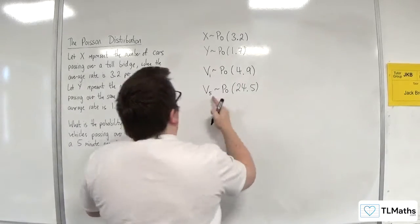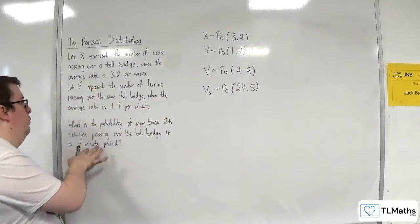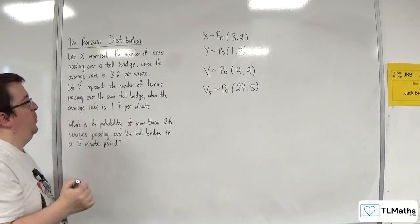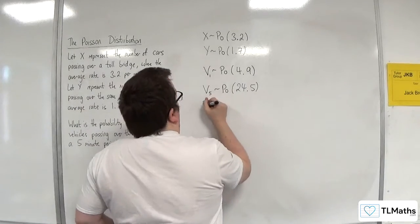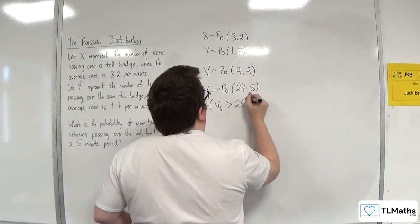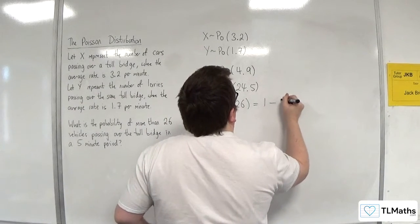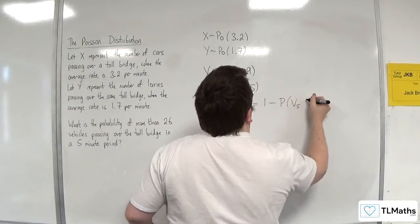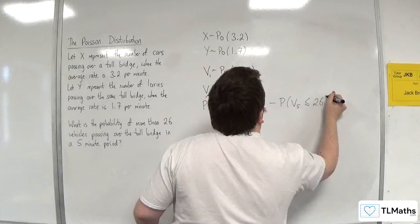So this is the distribution I need to work with, and I want more than 26. So the probability of V5 being more than 26 will be 1 take away V5 being less than or equal to 26.